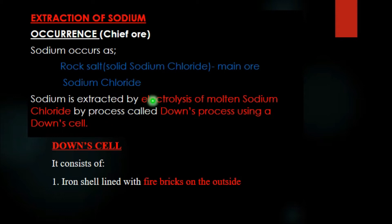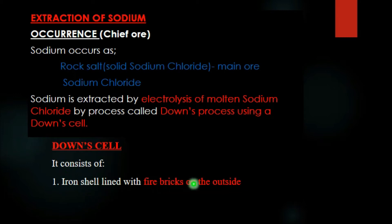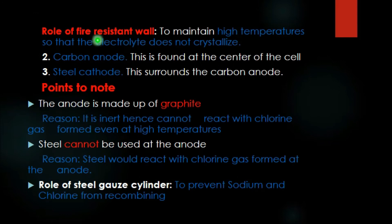The reason we use electrolysis to extract sodium is because sodium is a very reactive metal. The Down cell consists of an iron shell that is lined with fire bricks on the outside. The role of the fire bricks is to maintain high temperatures so that the electrolyte — molten sodium chloride — does not crystallize out.